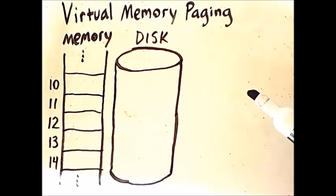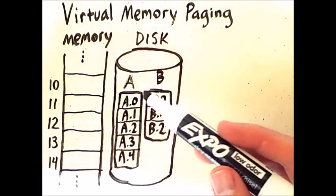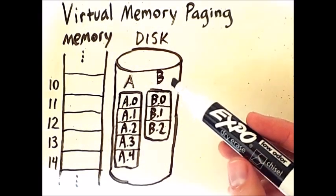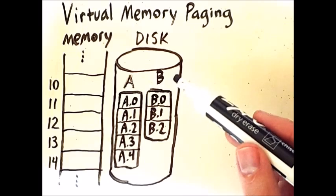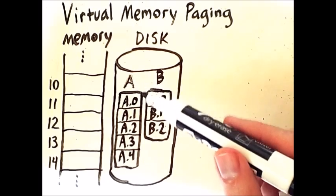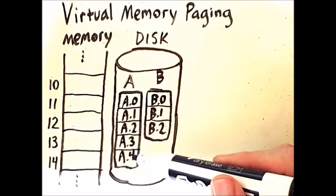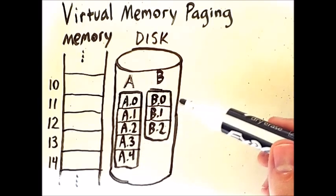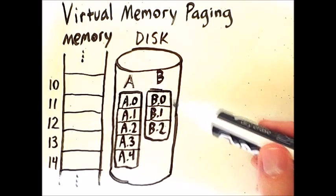The process is still partially resident in memory and can execute as long as the portions of the process that are needed are in memory. Here we see two processes on disk, process A and process B. They are broken up into their pages. A consists of five pages, A0 through A4, and B consists of three pages, B0 through B2.